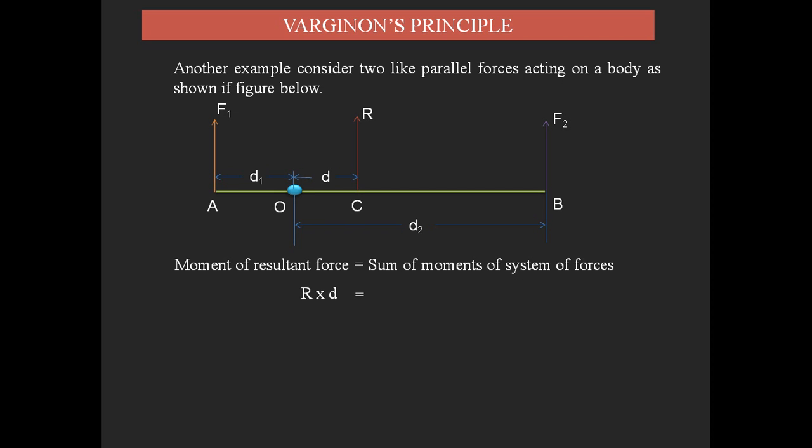So R x D, that is moment of resultant force with respect to O, equals moment due to F1 that is minus F1 x D1. Here the minus sign we have taken because this force F1 causes the clockwise rotational motion. The clockwise rotation we have to consider as negative.